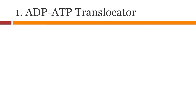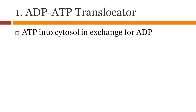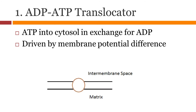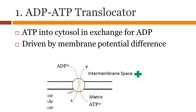The first transport system is ADP-ATP translocase. ATP moves out in exchange for ADP. This process is driven by the potential difference between the intermembrane space and the matrix. The intermembrane space is positively charged due to proton pumping, which drives ATP out since ADP has three negative charges and ATP has four negative charges. This exchange happens through a channel protein called adenine nucleotide translocase — an antiport transport system.